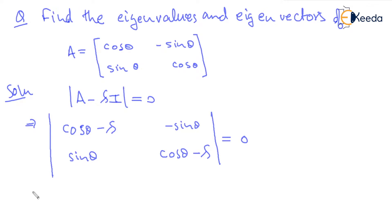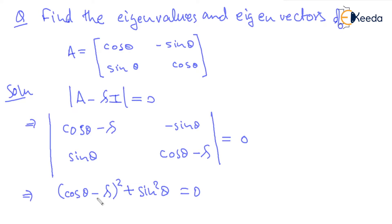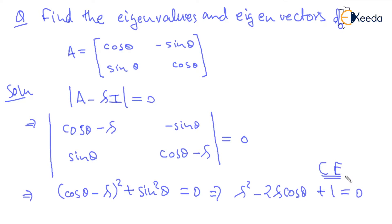The equation we are getting is: cos theta minus lambda squared, minus negative sin squared theta, equal to 0. Expanding: cos squared theta, minus 2 cos theta times lambda, plus lambda squared, plus sin squared theta. Since cos squared theta plus sin squared theta equals 1, the equation becomes lambda squared minus 2 lambda cos theta plus 1 equal to 0. This is the characteristic equation — a second order polynomial in lambda.